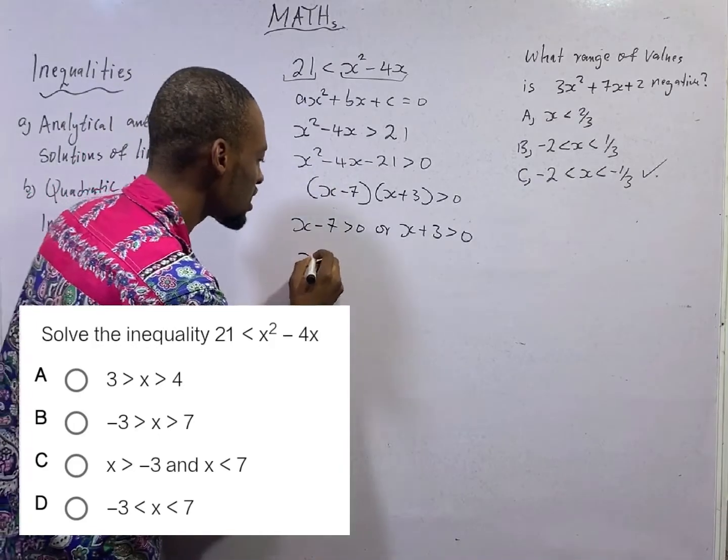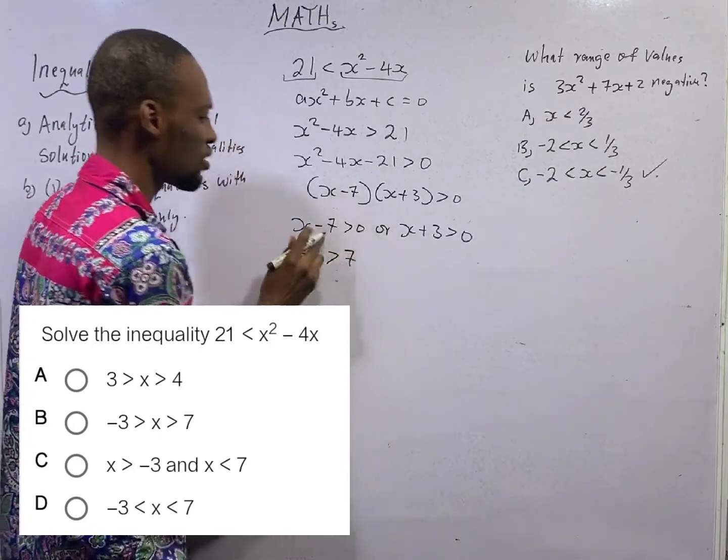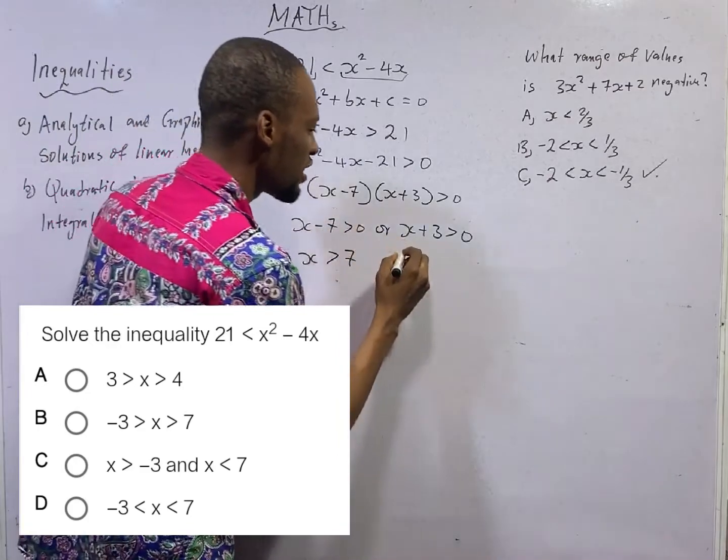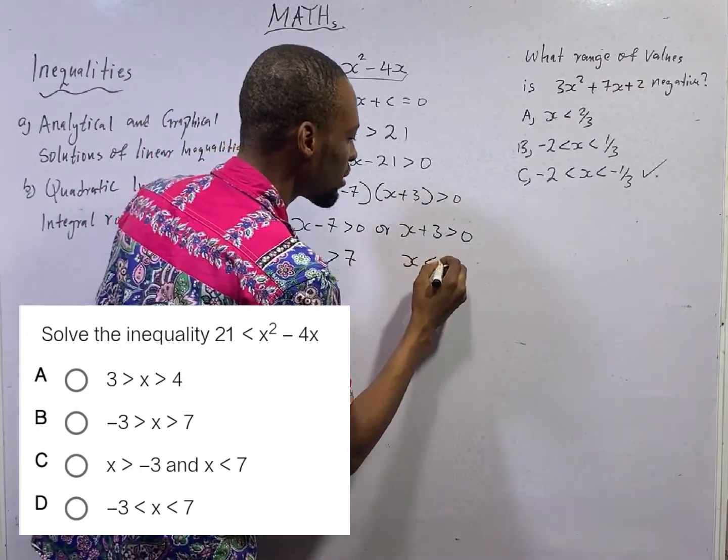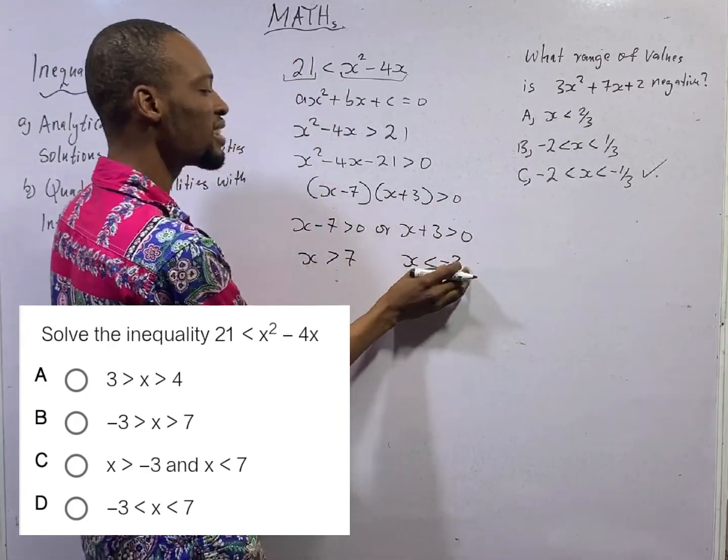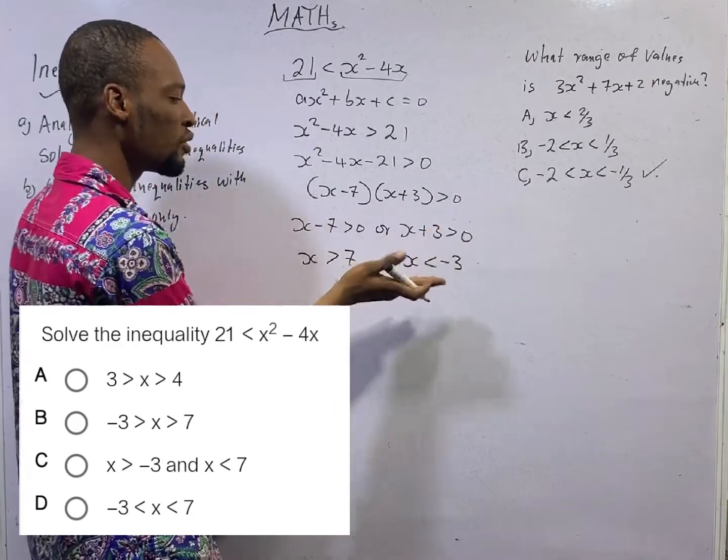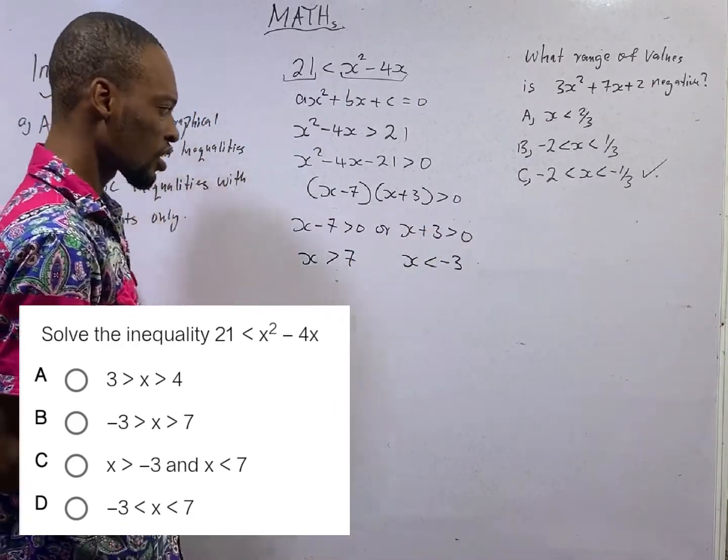Here will therefore be s is greater than 7. That is positive answer. Here is s lesser than minus 3. Minus 3 is a negative answer. So the sign will therefore invert.